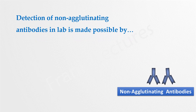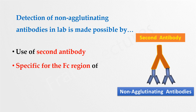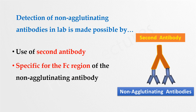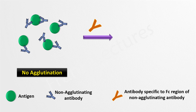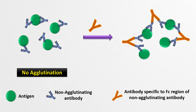Detection of non-agglutinating antibodies in the lab is made possible by using a second antibody. This second antibody is specific for the Fc regions of non-agglutinating antibodies. Suppose these are antigens to which non-agglutinating antibodies are bound. We add a second antibody which has a binding site for the Fc region of non-agglutinating antibodies. These second antibodies will bind to the non-agglutinating antibodies and bridge the gap between them, resulting in agglutination, which confirms the presence of non-agglutinating antibodies.